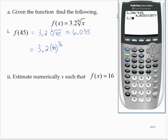So, 3.2 times 45, carat, parentheses, 1, division, 6, close parentheses. We get the same thing.